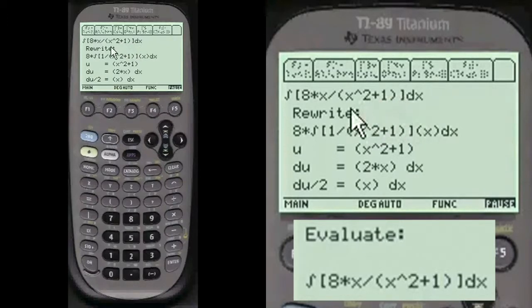Here's the original function. And all these you have to rewrite them. Notice that there's a constant here of 8. You have to bring that outside the integral. That's very important. And we're going to also take the x here and put it over by the dx.